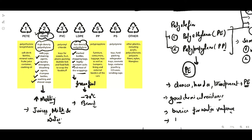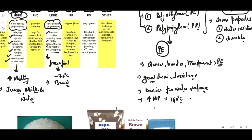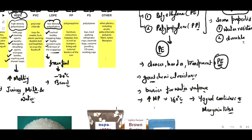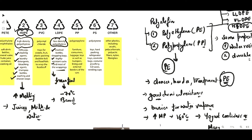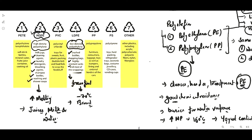Apart from that, polypropylene has a high melting point of up to 160 degrees centigrade, and it is used in the packaging of yogurt containers and margarine tubs. As you can see, polypropylene is stronger than the PE one. It is also used in furniture, consumer goods, luggage, toys, etc.